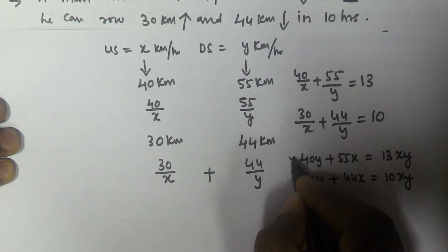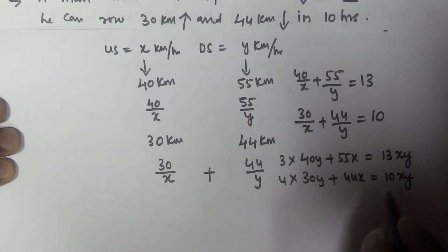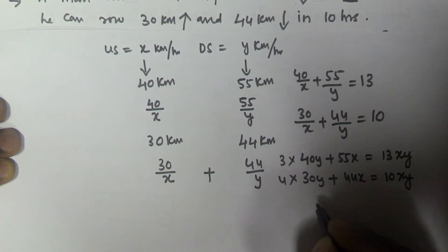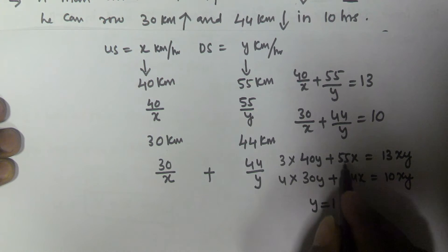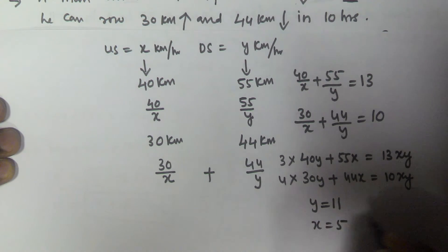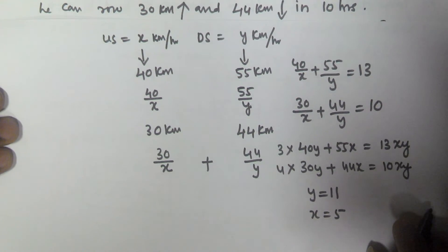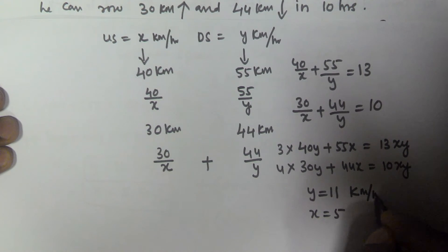By multiplying the first equation by 3 and the second equation by 4, then subtracting, we get y equals 11. After substituting this y value into one of the two equations, we get x equals 5. So x is 5 kilometers per hour (upstream speed) and y is 11 kilometers per hour (downstream speed).